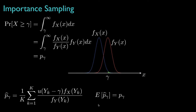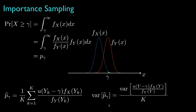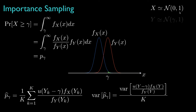The expected value for this estimator is the desired probability, and the variance is the variance of the function we're averaging divided by the number of trials. As an example, let's suppose the original density is a standard normal distribution — a Gaussian with zero mean and unit variance. To find the variance of this function, we evaluate the expected value for the square of the ratio of f sub x to f sub y with the unit step function.